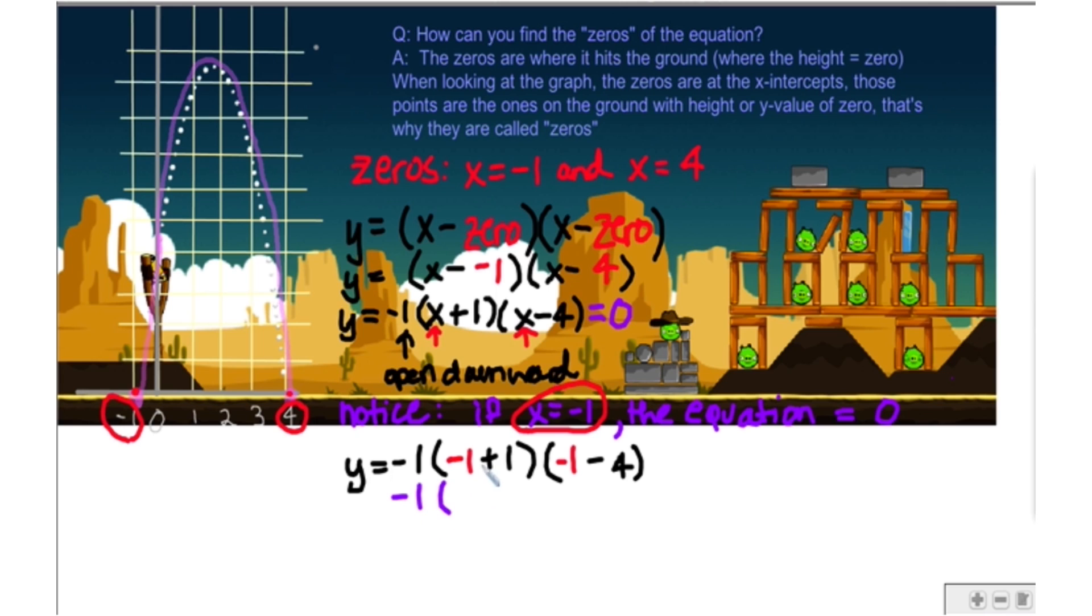So I got negative 1. Negative 1 plus 1 is zero. Negative 1 minus 4 is negative 5. So now we have y is equal to negative 1 times 0 is 0. 0 times negative 5 is 0. So notice when x is equal to negative 1, the equation is equal to 0. So that's telling us that x equals negative 1 is a zero of the equation.